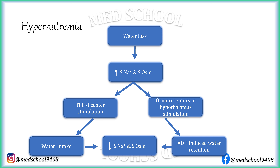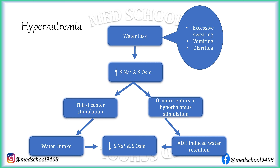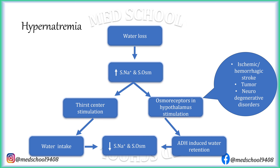From the physiology of equilibrium of serum sodium, causes of hypernatremia can be easily understood. Water loss due to excessive sweating, vomiting, and diarrhea can cause hypernatremia. If osmoreceptors are damaged, the signal to the pituitary to release ADH will not be sent. This can occur in ischemic or hemorrhagic stroke, tumor, and neurodegenerative disorders.